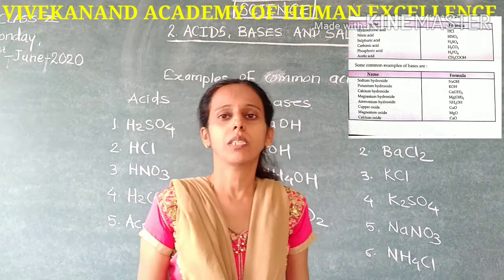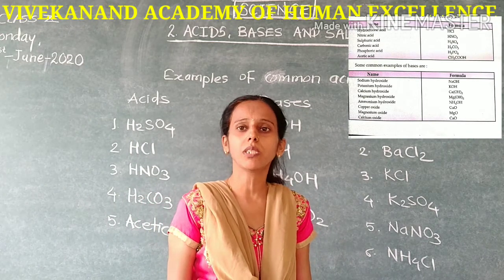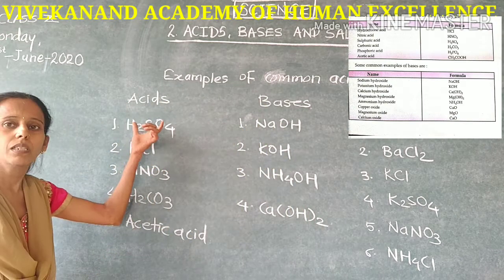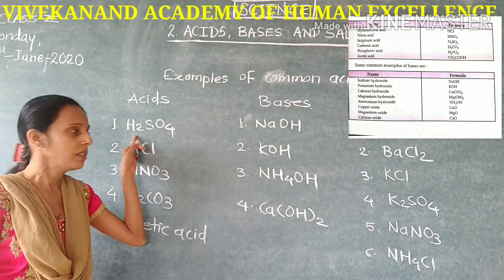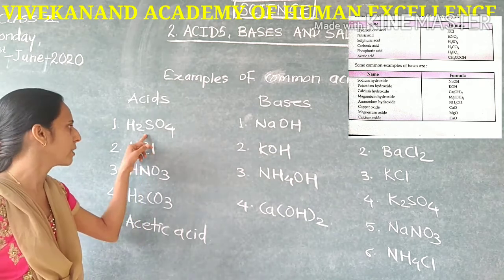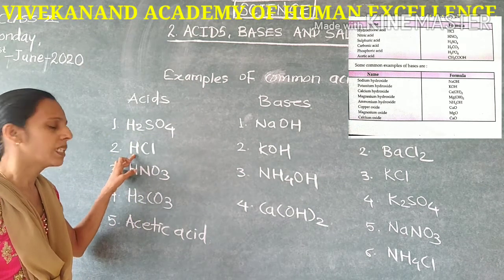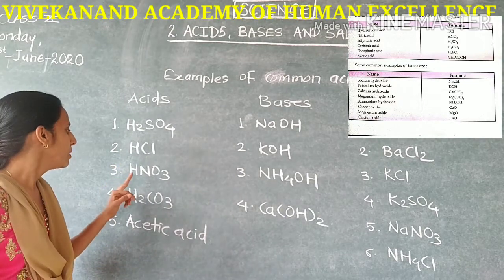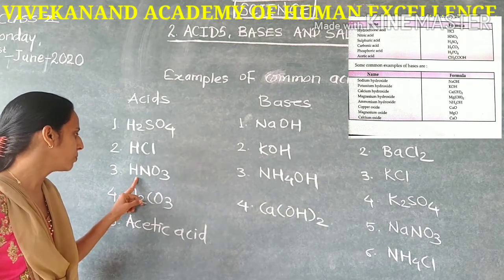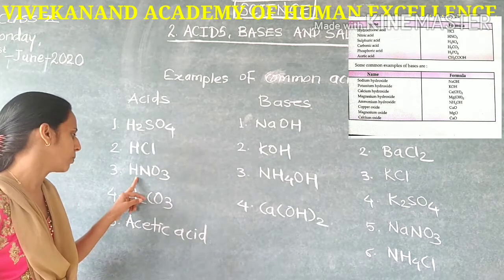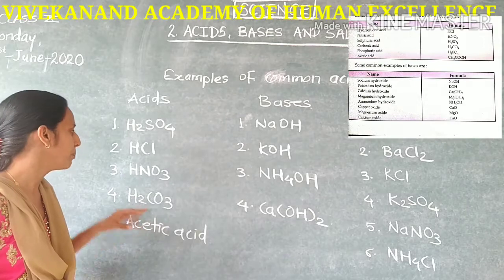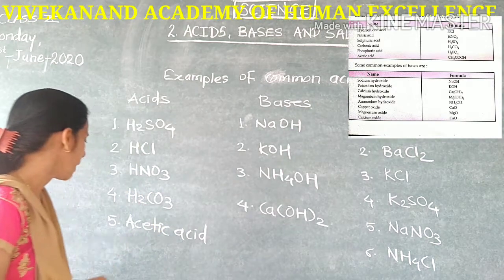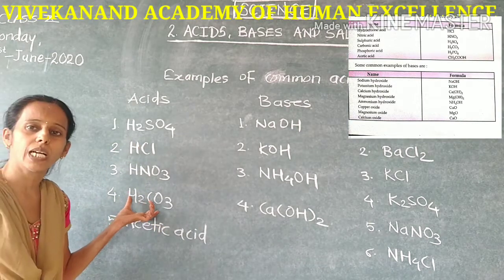Previously you have knowledge about what are the acids, what are bases and what are the salts. Common examples of acids that you have seen previously are sulfuric acid — its molecular formula is H2SO4 — hydrochloric acid, that is HCl, nitric acid HNO3, and carbonic acid H2CO3. These 4 examples are of mineral acids, which are inorganic acids.